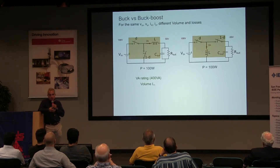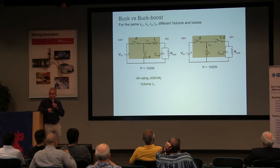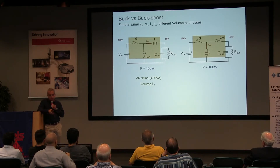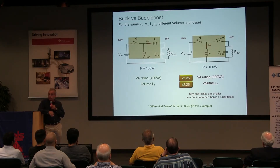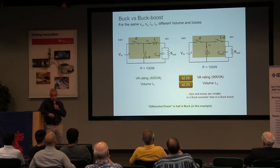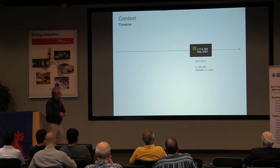Another well-known example is comparing a buck converter with a buck-boost converter for the same electrical specifications: 100W in both cases, 100V input, 50V output. The current through the inductor is 2A in the buck, and 3A in the buck-boost. The voltage rating of the devices is 100V in the buck and 150V in the buck-boost. So for the same electrical specifications, you have a factor slightly higher than 2 both in the VA rating and the volume of the inductor. The nominal power is identical at 100W, but the differential power — the power processed by the components — is very different.